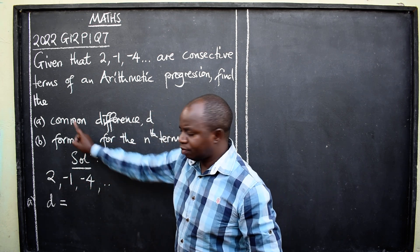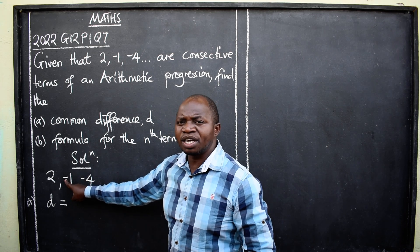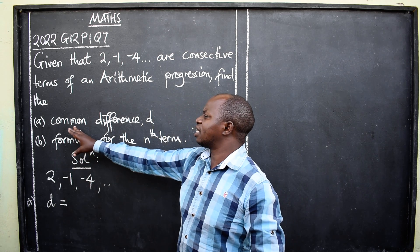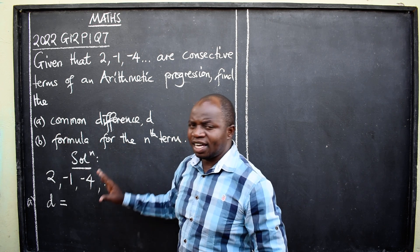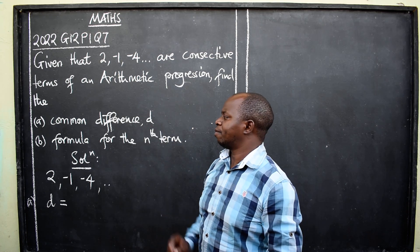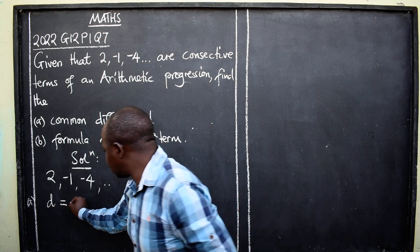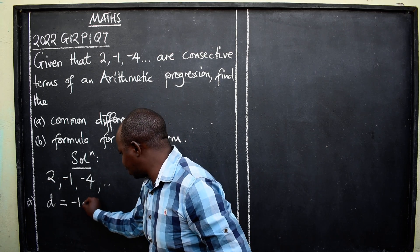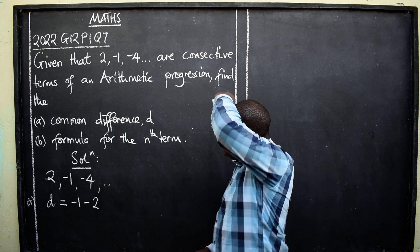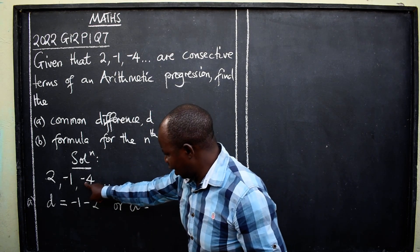It should be common — even when you say negative four minus negative one, you should get the same value. It should be common. If it is not common, then that sequence is not AP. So d equals negative one minus two, and that answer should be the same as d equals negative four minus negative one.